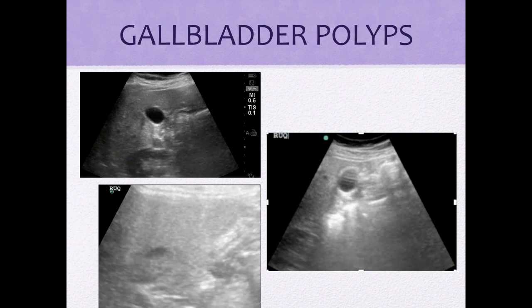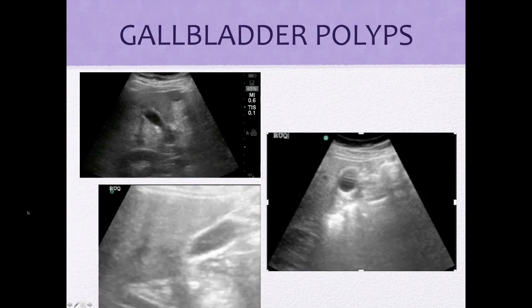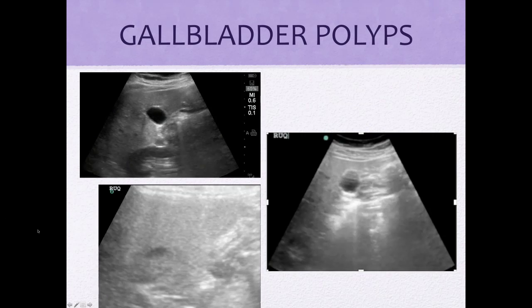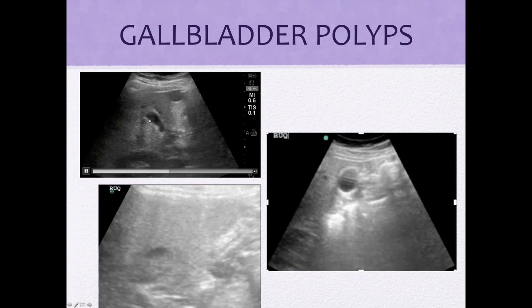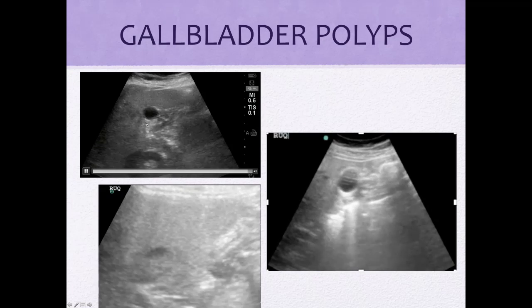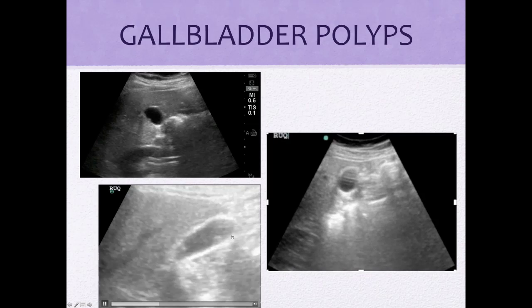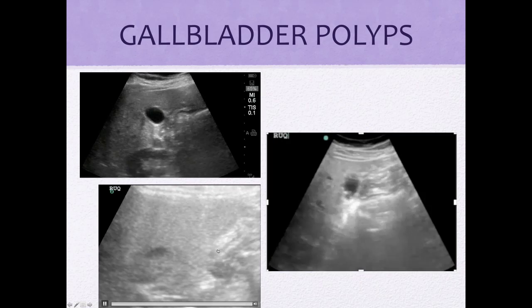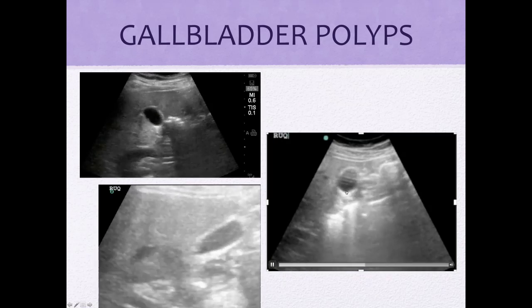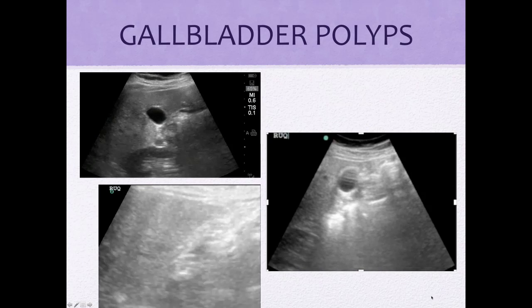Here are some examples of gallbladder polyps on ultrasound. Notice echogenic foci without shadowing. In video one, there's the polyp. This one has a couple of polyps — right there and right there. A few polyps down here as well, and look — no shadowing.